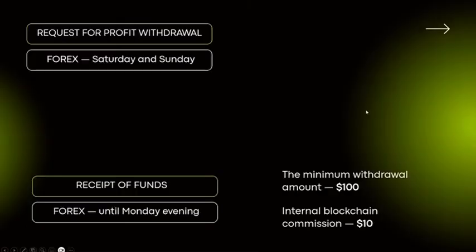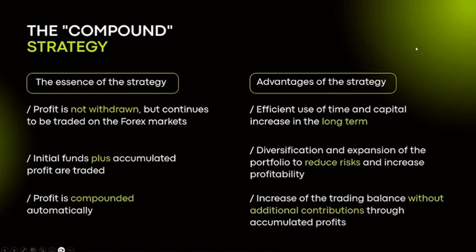You request your profits on Saturday or Sunday if you're in Europe, or still on Friday if you're in North or South America. The minimum withdrawal is $100 — once you reach that amount, the withdrawal button will appear. You'll also pay a $10 blockchain commission, which goes to the Tron blockchain, not to Endotech.